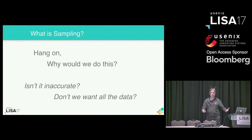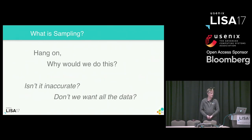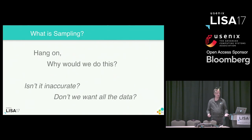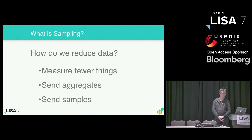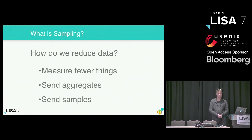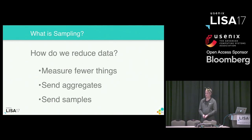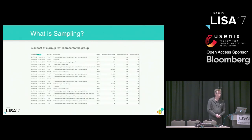It doesn't make sense. You'll be burning money that should be better spent doing other things. So we need to reduce the total amount of data we are going to be looking at. We could measure fewer things — nobody wants to do this. We can aggregate the data before sending it into our observability infrastructure. This is what metrics do. They do it very well. I'm not talking about that today. We can send samples.